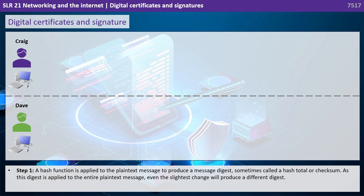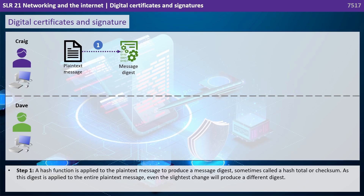Step one: a hash function is applied to the plain text message to produce what's called a message digest, sometimes called a hash total or checksum. As this digest is applied to the entire plain text message, even the slightest change will produce a different digest.